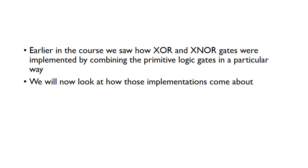Earlier in the course we saw how XOR and XNOR gates were implemented by combining the primitive logic gates AND, OR and NOT in a particular way. So now we'll look at how those implementations come about.